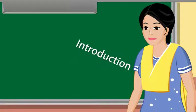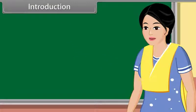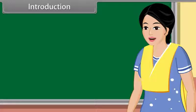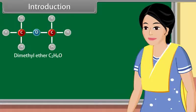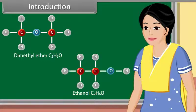Today we learn isomers and concepts used in organic reaction mechanism. The organic compounds which have same molecular formula but different configurations are called isomers. The examples of isomers are dimethyl ether and ethanol — they have the same molecular formula but different configuration.